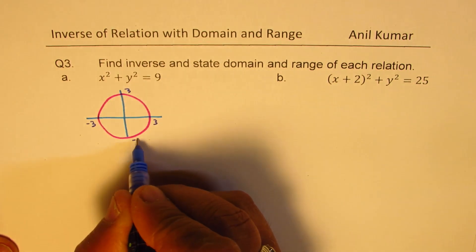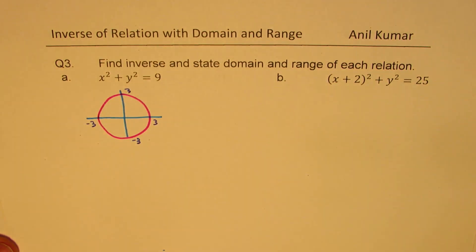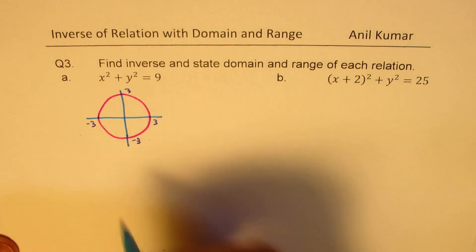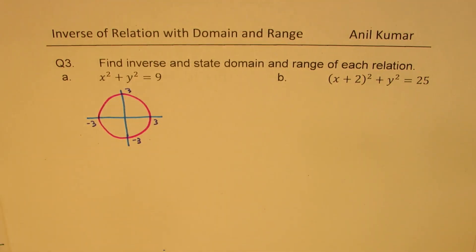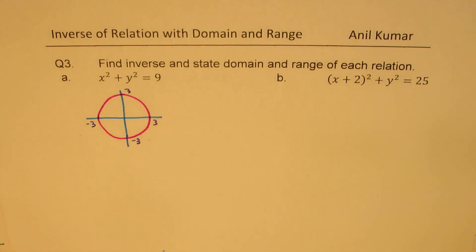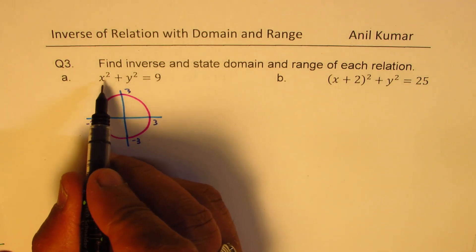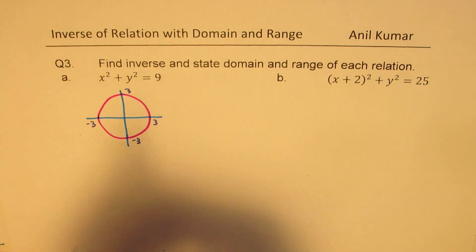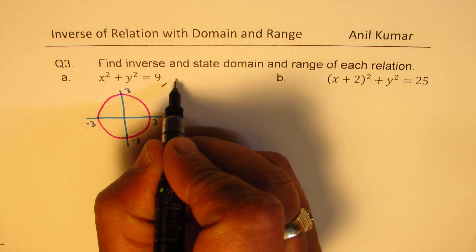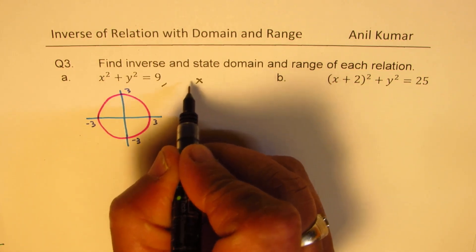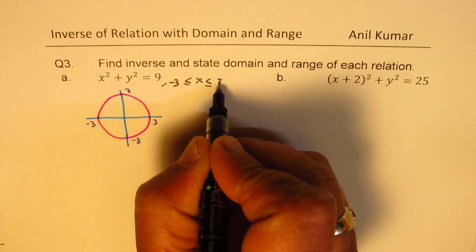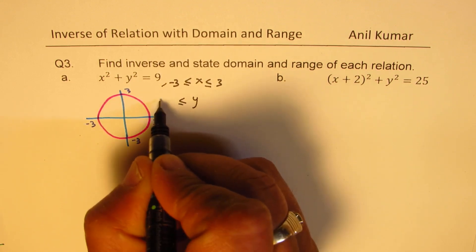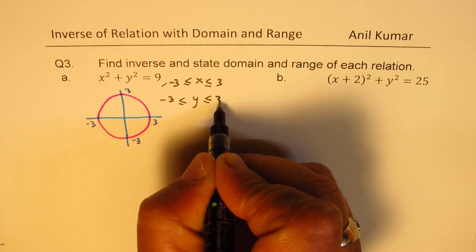From this diagram itself, you can write down the domain and range for the given relation. We need to state domain and range for each relation. For x squared plus y squared equals to 9, the domain is that the value of x is between plus and minus 3, and the value of y is also between plus and minus 3.